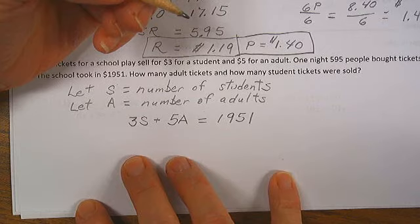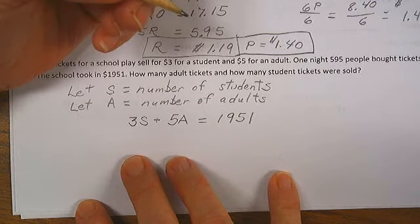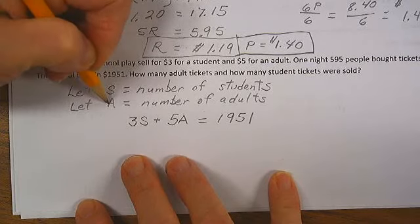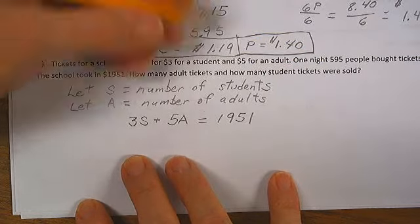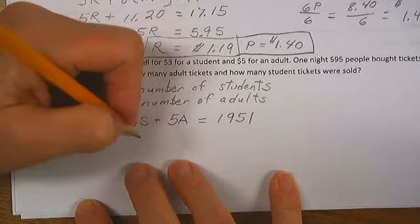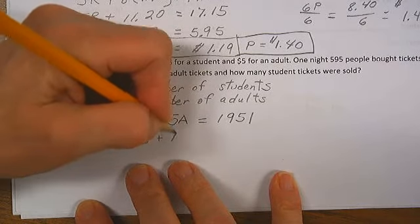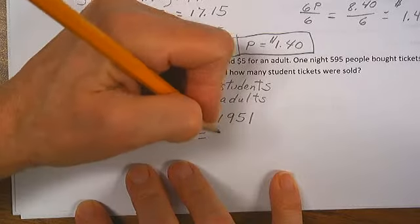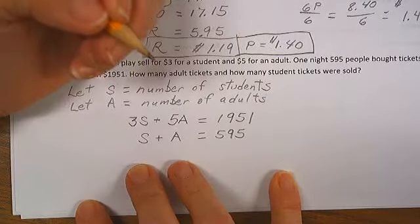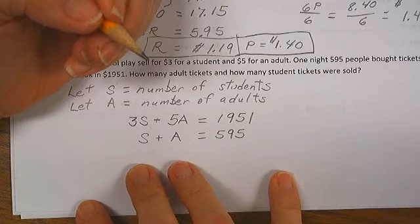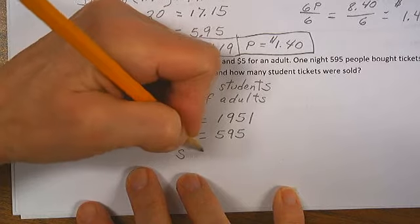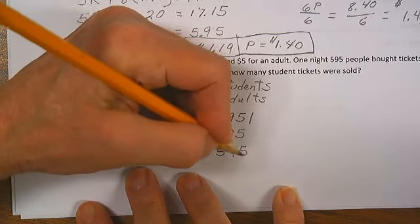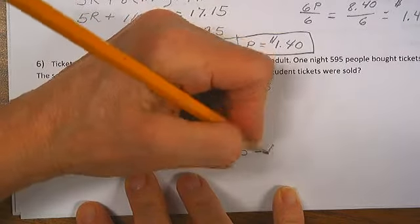What else do we know? Well, we know that everybody who bought a ticket was either a student or an adult. And we know that we had 595 people. So if we had 595 people, the number of students plus the number of adults was equal to 595. Okay, what else do we know? Well, we know that the number of students was equal to 595, total number of people, minus the number of adults.